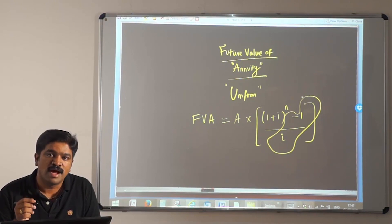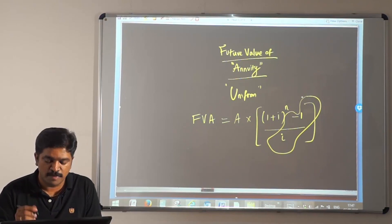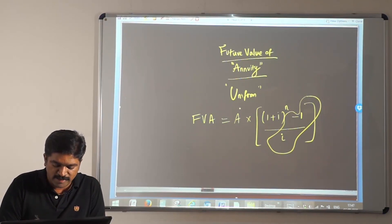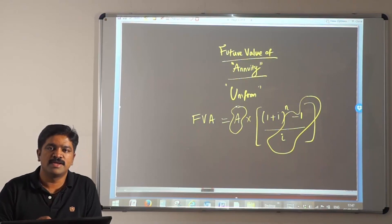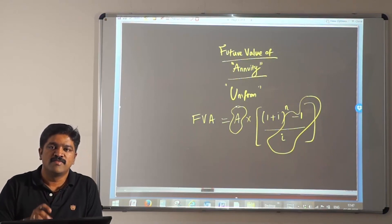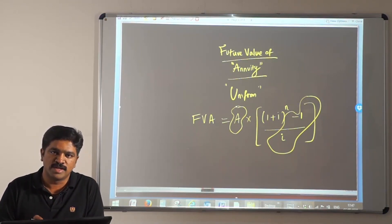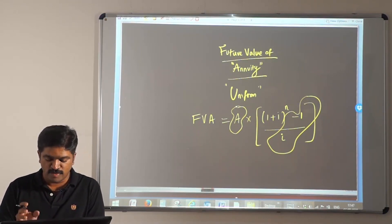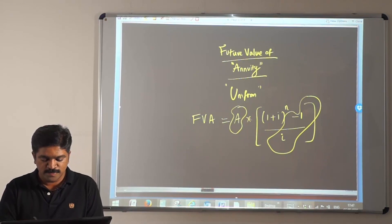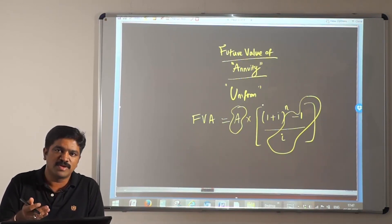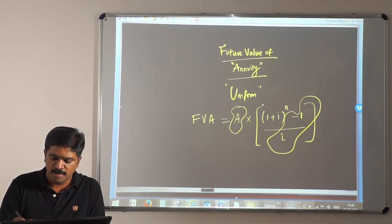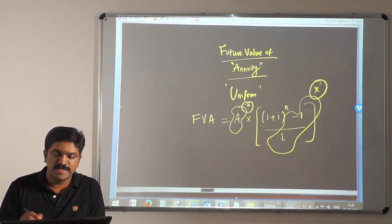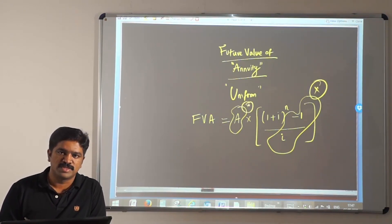This formula is basically an extension of our future value of single cash flow formula. The alterations have happened in the bracketed portion. In future value of single cash flow, we had principal, but here we are having annuity. Formula-wise, it is basically your future value of single cash flow formula, but with modifications in these two points.